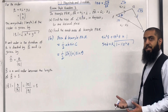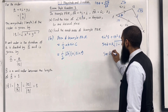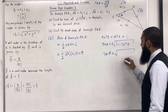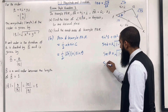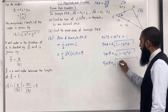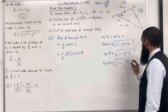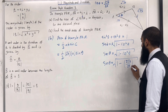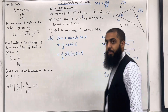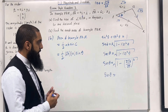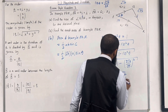Since area cannot be negative, we take the positive square root: sin θ = √(1 − cos²θ) = √(1 − (8√17/85)²) = 19√17/85.